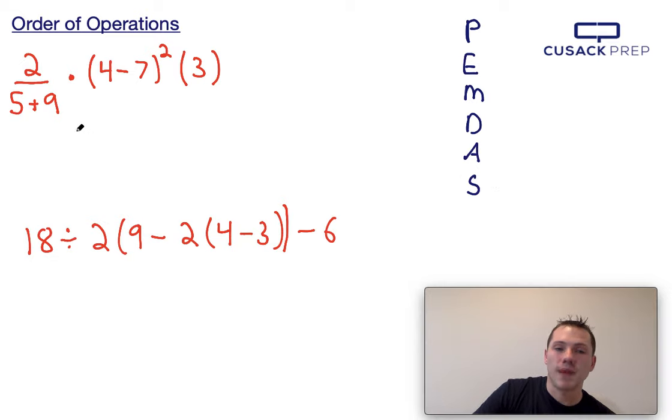So starting with the P, we're going to work through what's in parentheses first. Now since 4 minus 7 is in parentheses, we're going to turn that into negative 3. We're also going to go ahead and take this 5 plus 9 and we're going to turn that into 14.